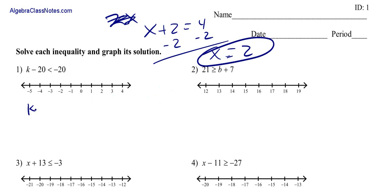We have got k minus 20 is less than negative 20. Well, we have got this k here. What is keeping k from being by itself is this negative 20. To make negative 20 zero, you add 20. Just bring down your inequality sign. Since we added 20 over here, we have got to add 20 over here. So minus 20 plus 20 is zero. So we are just left with the k. So we know k is less than zero. And by the way, k is a negative number.